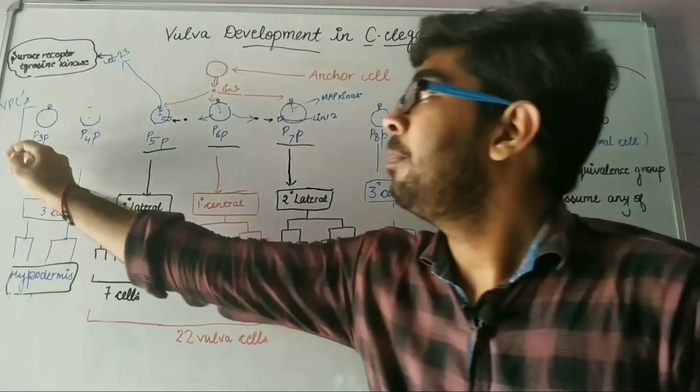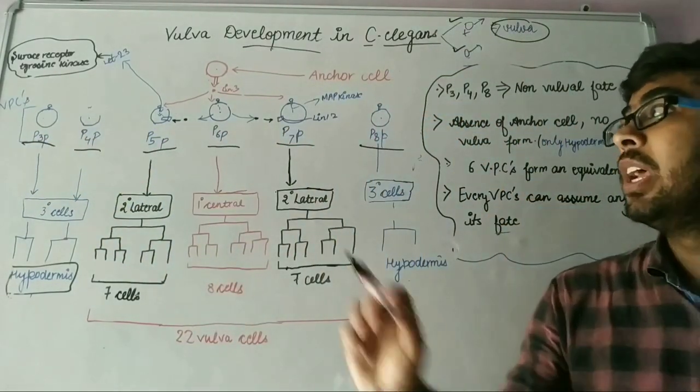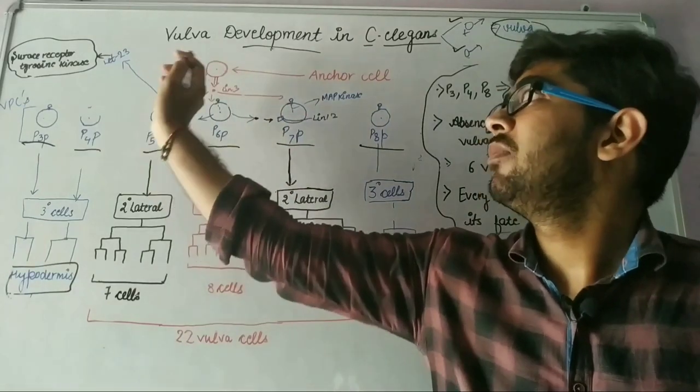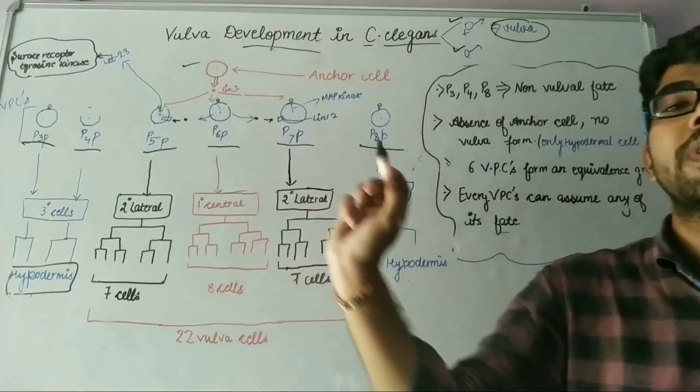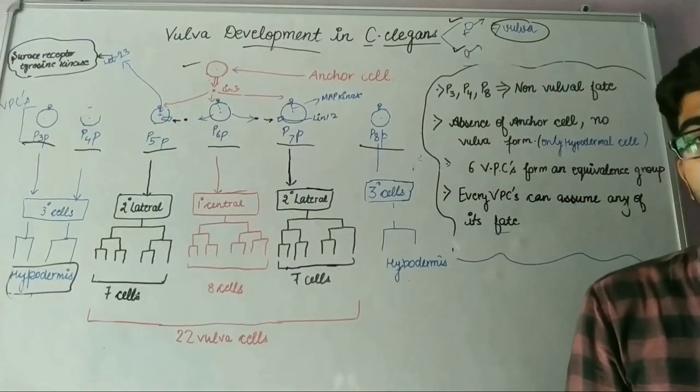But the P3P, P4P, and P8P vulva precursor cells are found at a distant region from this anchor cell. That's why they will not receive any LIN3 protein.